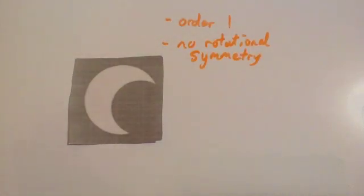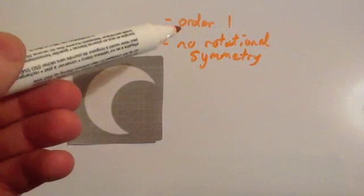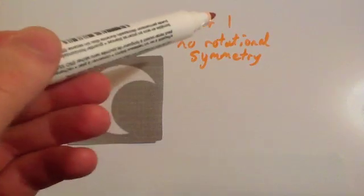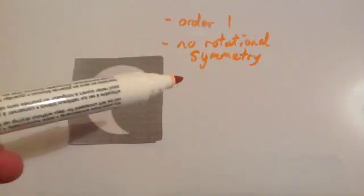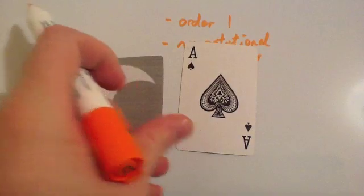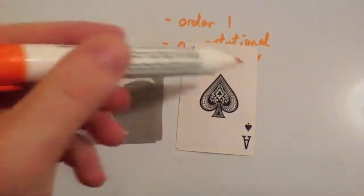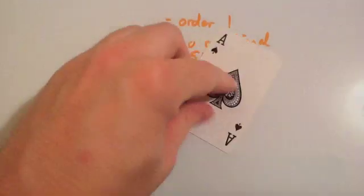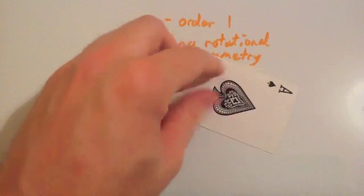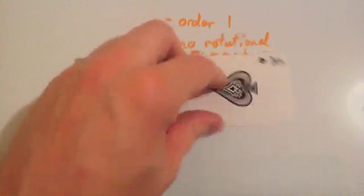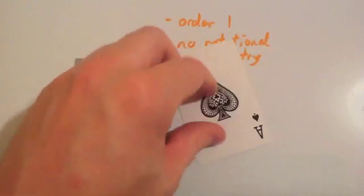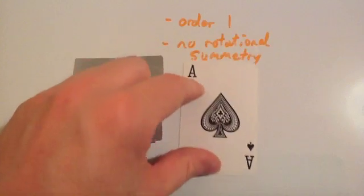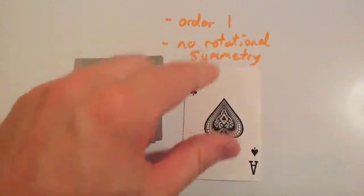All the other shapes with order two, order three, order four, etc. have got rotational symmetry. But if a shape has got order one, then it has no rotational symmetry. For instance, this playing card — whenever you turn it through 360 degrees, it has only got one position the same, so it's order one, and it has no rotational symmetry.